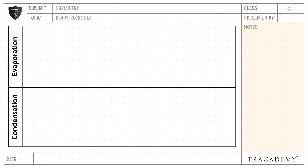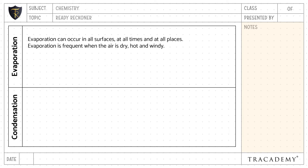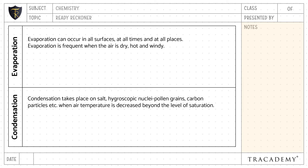Evaporation can occur on all surfaces, at all times and at all places. Evaporation is frequent when the air is dry, hot, and windy.